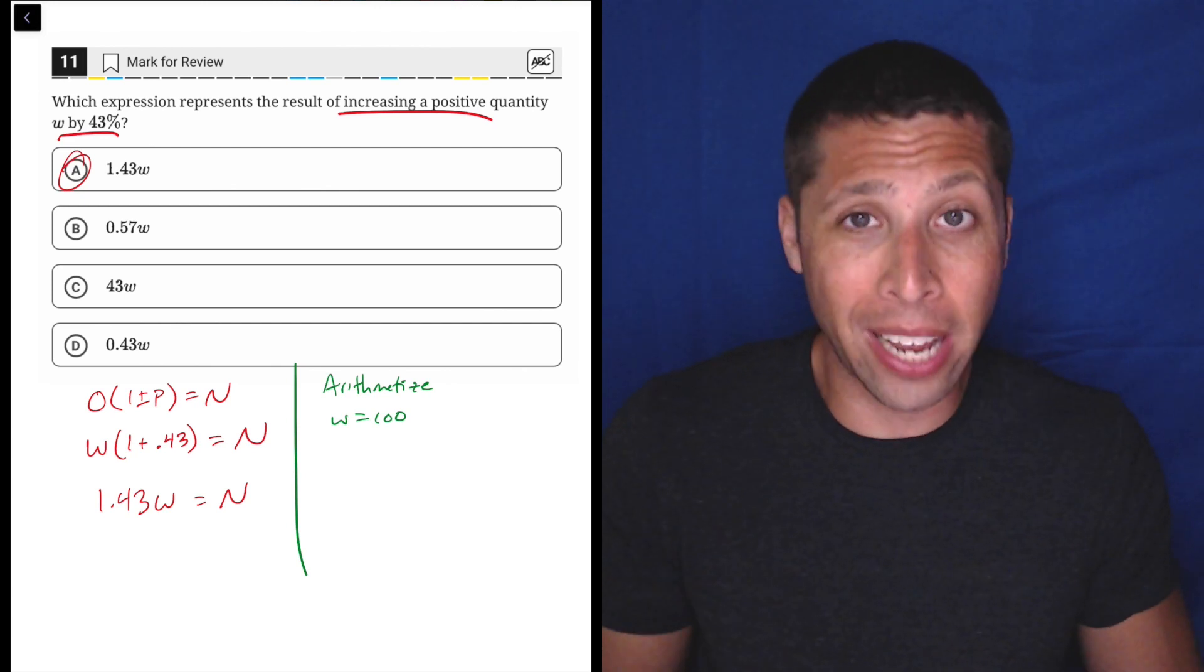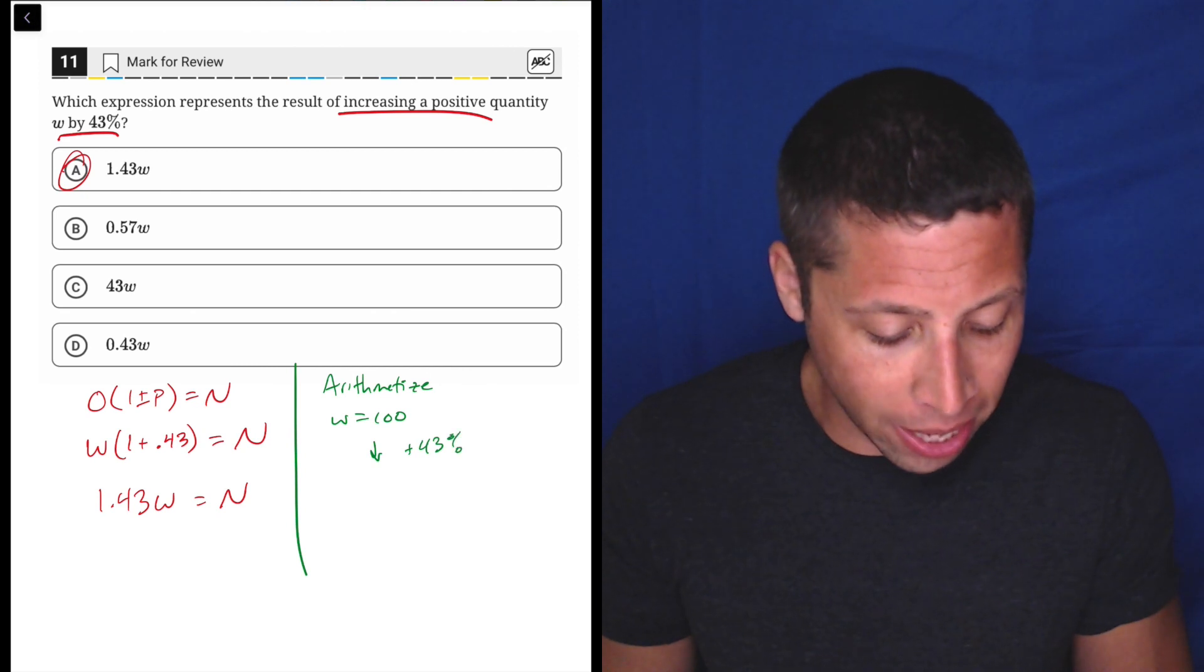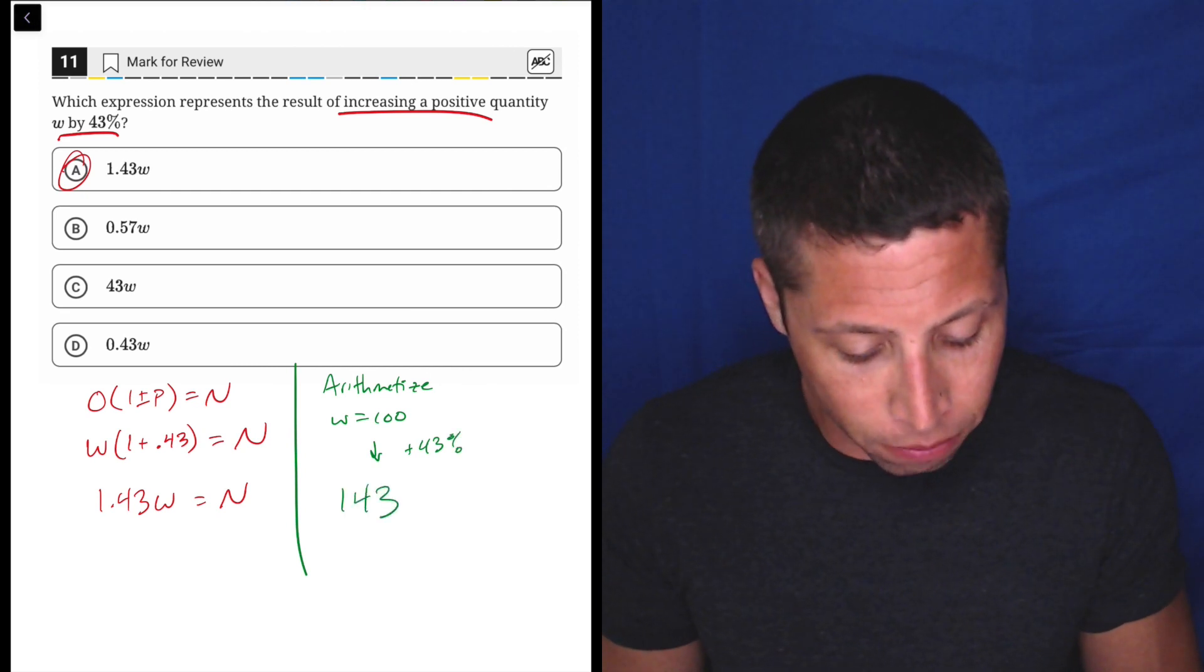Well, what is 43% of 100? It's 43. So 100 plus 43%, just kind of intuitively, is 143.